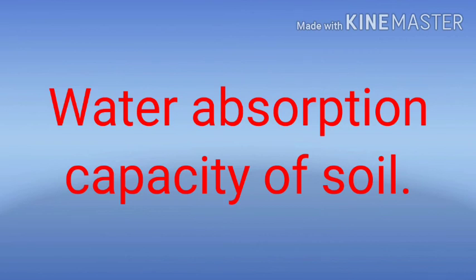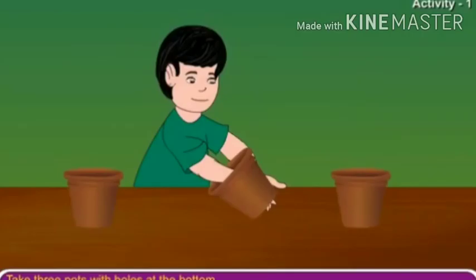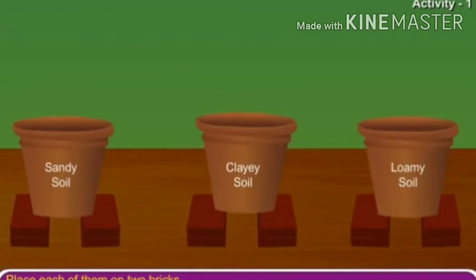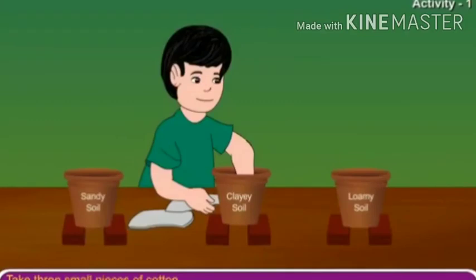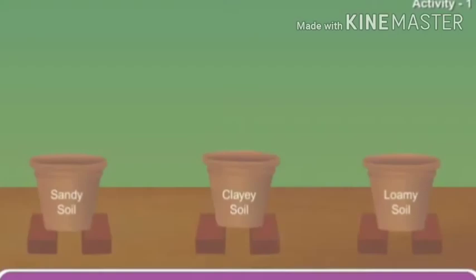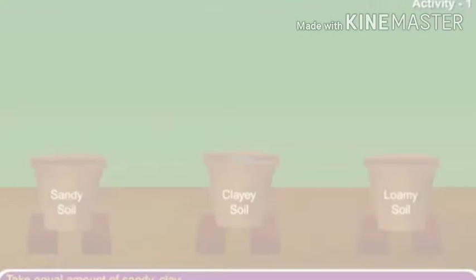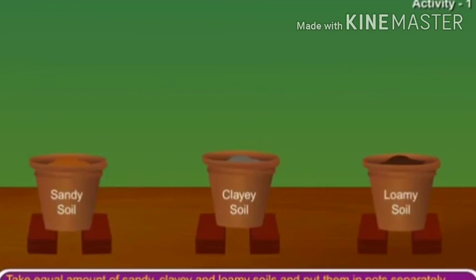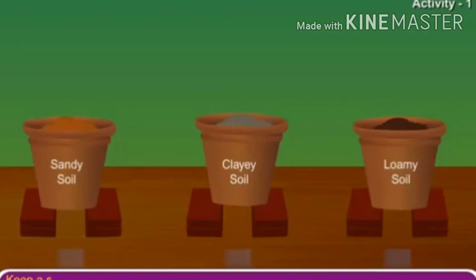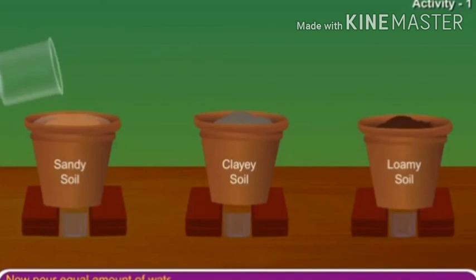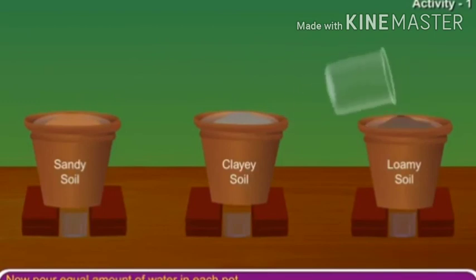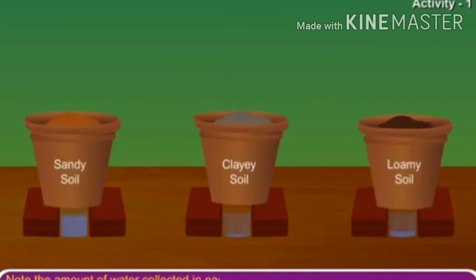Take three pots with holes at the bottom and place each of them on two bricks. Take three small pieces of cotton cloth and spread them at the bottom of each pot so that the holes are completely covered. Take equal amounts of sandy, clayey, and loamy soils and put them in the pots separately. Keep a small beaker under the hole of each pot, then pour equal amounts of water into each pot and note the amount of water collected in each beaker.